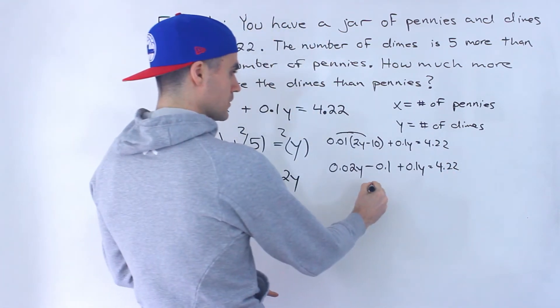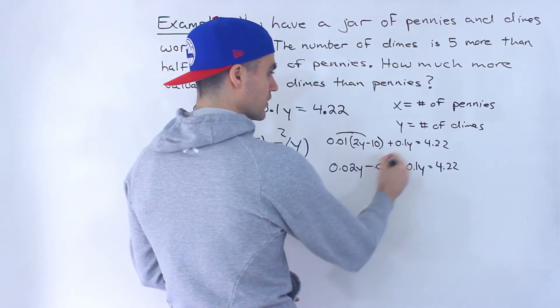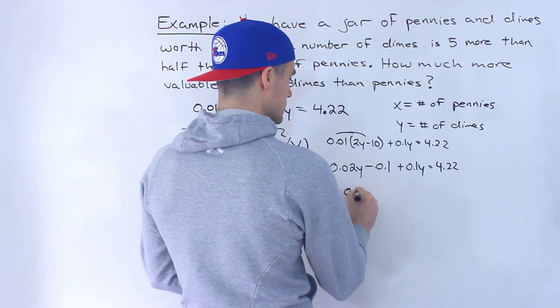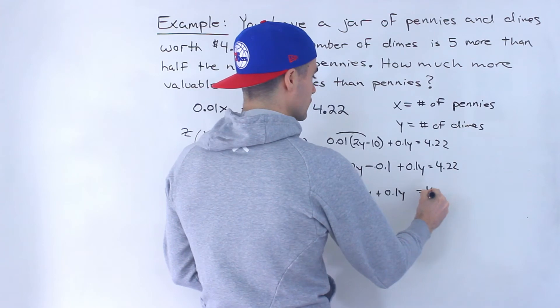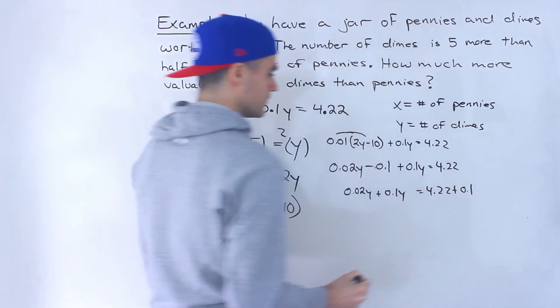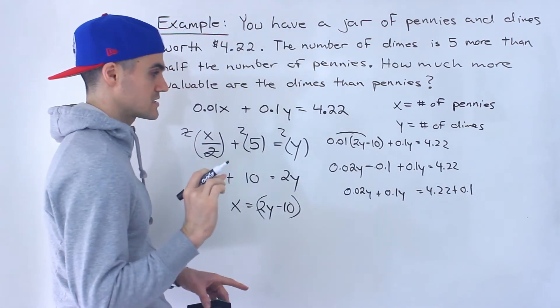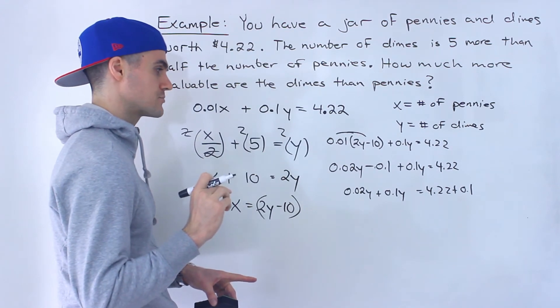We'll have plus 0.1y equals 4.22. So here we would end up with, let's bring this over, so we'd have 0.02y plus 0.1y equals 4.22 plus 0.1. So we're working with lots of decimals here, so just be careful with the algebra.